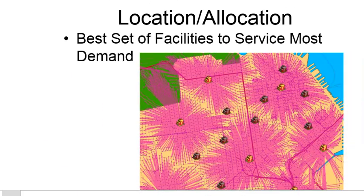Another type of network analysis problem is location allocation — finding the best set of facilities to service the most demand. For example, we might say we have fire stations in a city and we want to find the six fire stations that will service the most addresses. These six fire stations are selected because they can service the most addresses in the city.